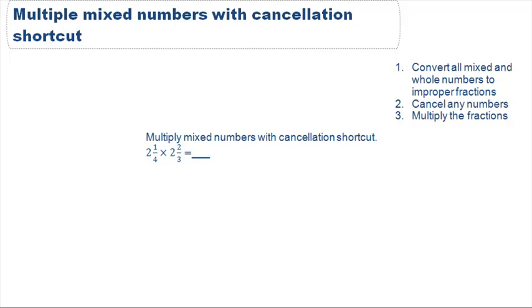I've listed steps on the side to help us successfully solve this problem. Multiply mixed numbers with cancellation shortcut: 2 and 1 fourth times 2 and 2 thirds. Step 1, convert all mixed numbers and whole numbers to improper fractions.